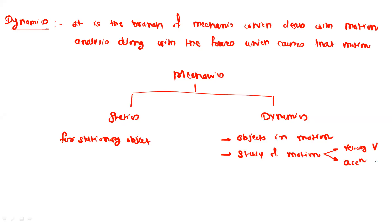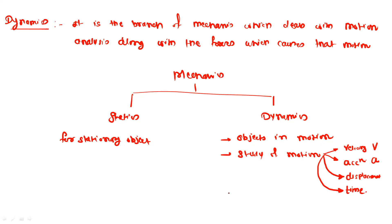So velocity is V and acceleration is A. The third parameter to describe motion is displacement — when an object is moving from one point to another point, that will be called displacement. The next parameter is time: how much time has been taken by a particular object or particle to cover a particular distance. Motion is defined by these parameters, so these are called motion parameters. We will deal with all these parameters when we study the motion of a particular object or particle in dynamics.